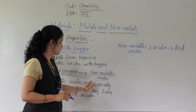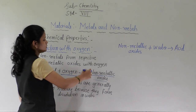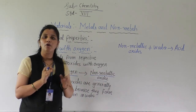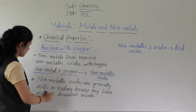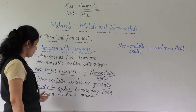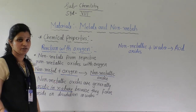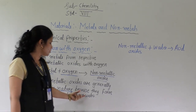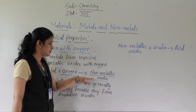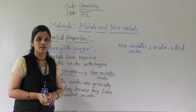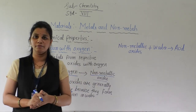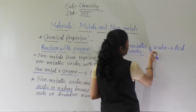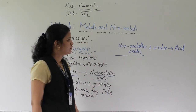Non-metallic oxides are generally acidic in nature. Mostly all non-metallic oxides are acidic in nature. They are acidic because they form acids on dissolution in water. When these oxides dissolve in water — meaning when they react with water — they form an acid. The general reaction is: non-metallic oxide + water → acid.